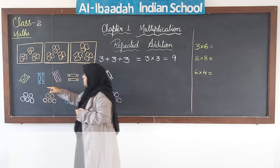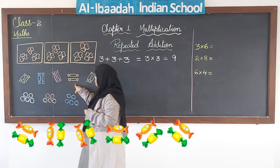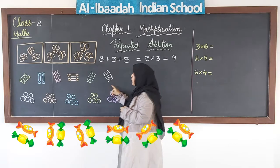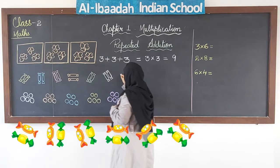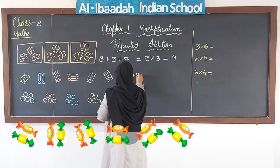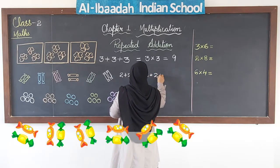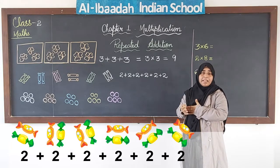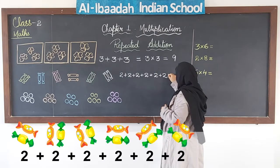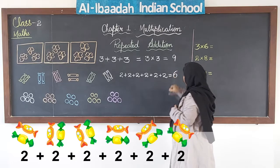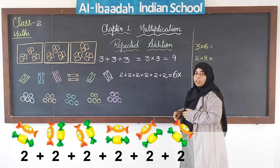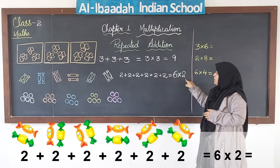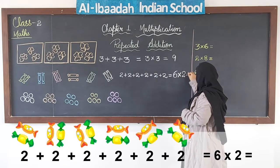Let us look at the second example. Here I have 2 chocolates in each group — 2, 2, 2, 2, 2, 2 chocolates. So we add them: 2 plus 2 plus 2 plus 2 plus 2 plus 2, adding 6 times. Now instead of adding the same number again and again, we change it to multiplication form. How many times did I add 2? 6 times. So 6 into 2 equals 12.